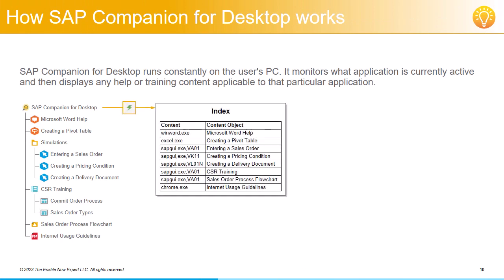You then need to generate the SAP Companion for Desktop index. This index is effectively a table that lists all the available contexts and the objects that contain them for all of the objects under your SAP Companion for Desktop object. Note that if your selection includes any content objects that don't explicitly contain an application context, these objects simply won't be included in the index. That's the case here, where the two book pages under CSR Training do not include context, so are not included in the index. But the book containing them does, so users will still have access to these book pages, just only via the book — they won't be listed individually.